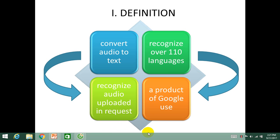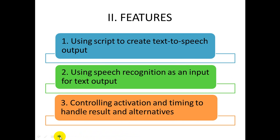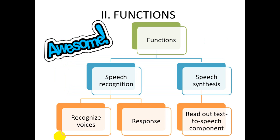Now we move to the next part: the features of API. API has great features which allow developers to incorporate speech recognition and synthesis into their web pages. Firstly, it uses script to generate text-to-speech output. Secondly, it uses speech recognition as an input for forms, continuous dictation and control. Last but not least, API allows the web page to control activation and timing to handle results and alternatives. With these features, API has two main amazing functions: speech recognition and speech synthesis.